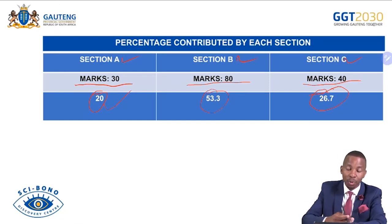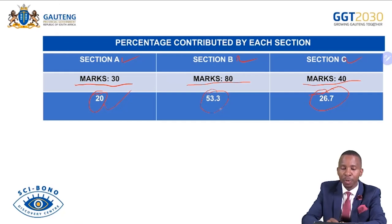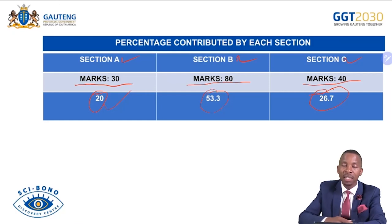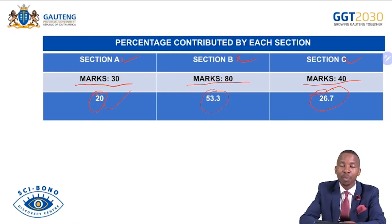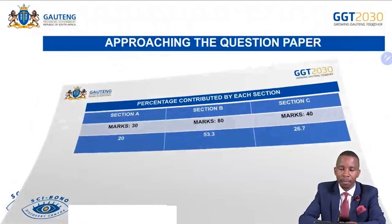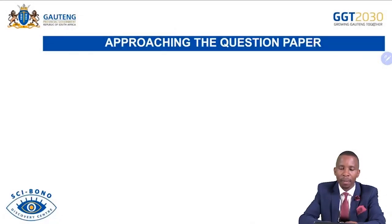Section A contributes 20%, Section B contributes 53.3%, and Section C contributes 26.7%. All of these percentages are important — ensure that you push yourself so that it will be easy for you to get marks.